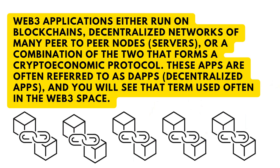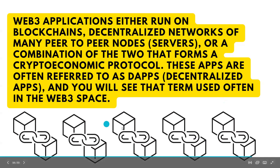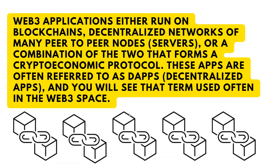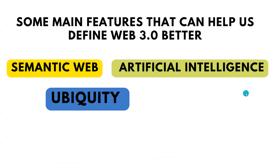These apps are referred to as DApps — decentralized apps — because the data that circulates in these DApps is not stored on any central server. Instead, it is distributed among all the users that use the DApps. You will hear the term DApp a lot in the Web 3 ecosystem, because all the apps being built in the Web 3 ecosystem are DApps.